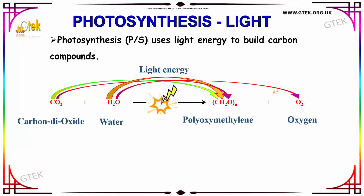The photosynthesis process uses light energy to build a carbon compound. You can see here that carbon dioxide reacts with water in the presence of light energy, so that we get polyoxymethylene and oxygen.